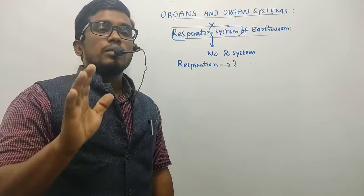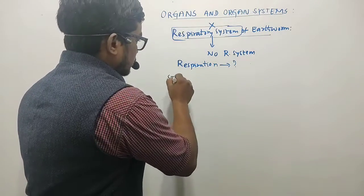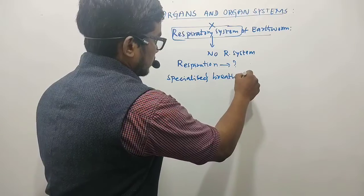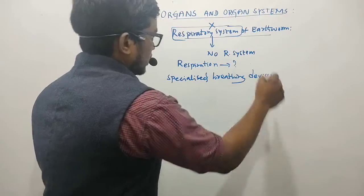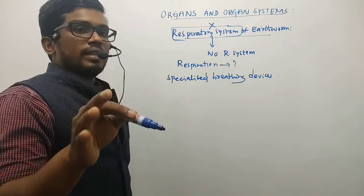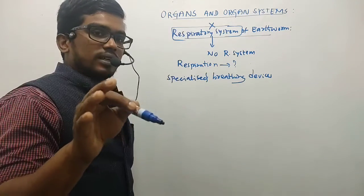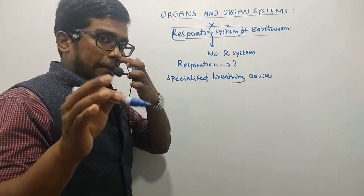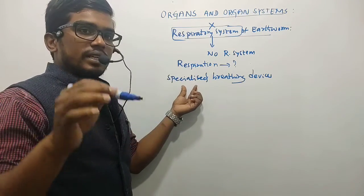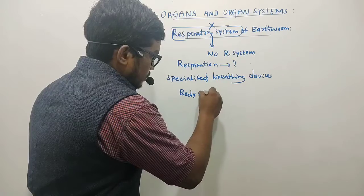Earthworms have specialized breathing devices. These specialized breathing devices help in the respiration process. Respiration occurs without a distinct respiratory organ — the respiratory system is absent, but specialized breathing devices are present.